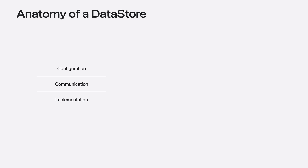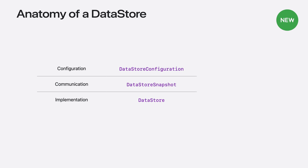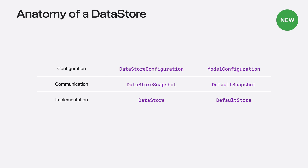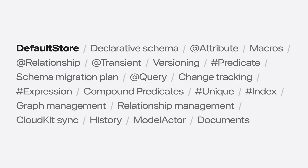There are three key parts to a store: a configuration to describe the store, snapshots to communicate model values with the model context, and a store implementation that the model container can manage. Each of these parts conform to three different protocols: DataStoreConfiguration, DataStoreSnapshot, and DataStore. The default store in Swift Data provides its own implementation of these types: ModelConfiguration, DefaultSnapshot, and the DefaultStore. The default store supports all the rich features of Swift Data, like migration, history tracking, and CloudKit sync, and it encapsulates the platform's best practices for performance and scalability, making it the best default choice for persisting models.